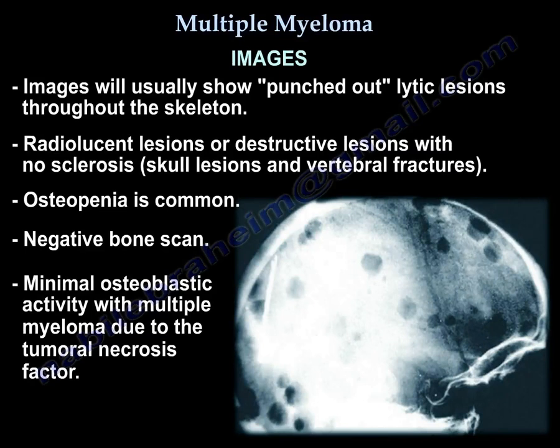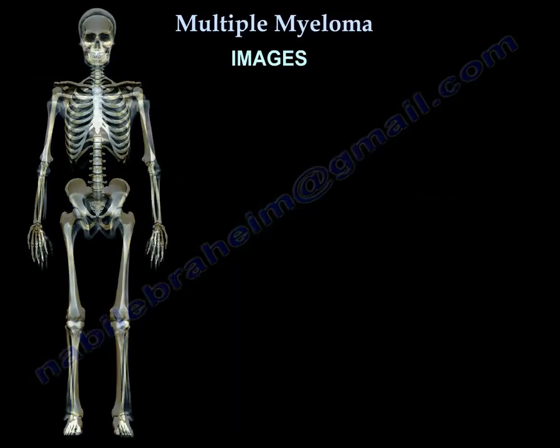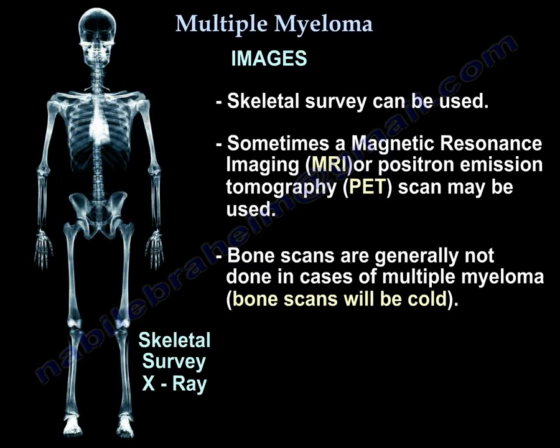On imaging, the images will show punched-out lytic lesions throughout the skeleton — radiolucent, destructive lesions with no sclerosis. You will see skull lesions and vertebral fractures; osteopenia is common. The bone scan is negative due to minimal osteoblastic activity because of tumor necrosis factor. You can use a skeletal survey; sometimes MRI or PET scan is used. The bone scan will be cold.